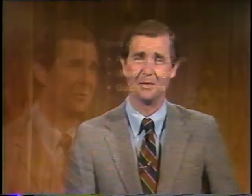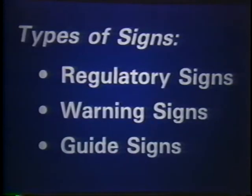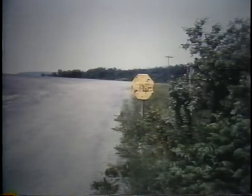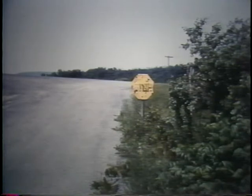The Manual on Uniform Traffic Control Devices categorizes signs by three groups: regulatory signs, warning signs, and guide signs. The public has grown to understand that a red octagon designates stop even when the legend cannot be read. When those basic principles of shape and color are violated, it is likely that the intended message of the sign will be missed by the public.